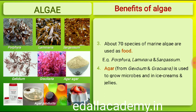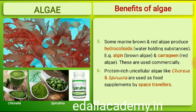Certain marine brown and red algae produce large amounts of hydrocolloids (water-holding substances) — for example, algin from brown algae and carrageen from red algae — which are used commercially. Agar, one of the commercial products obtained from Gelidium and Gracilaria, is used to grow microbes and in preparations of iodine. Algae are also used as food supplements by space-travelers.